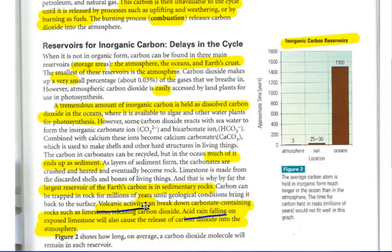Carbon can be trapped in rocks for millions of years until geological conditions bring it to the surface, such as volcanic activity can break down the carbonate-containing rocks, such as limestone, and release the carbon dioxide into the atmosphere again. Acid rain falling on limestone will also cause that carbon dioxide to be released from the rock as well.